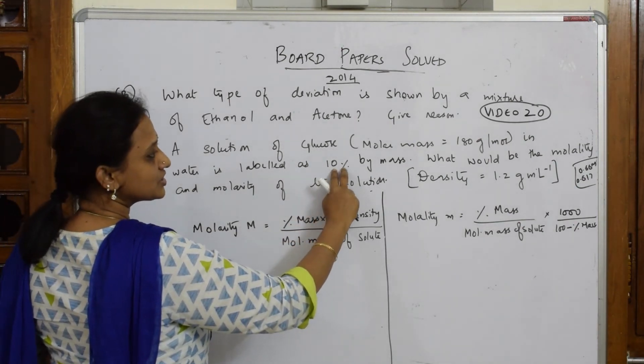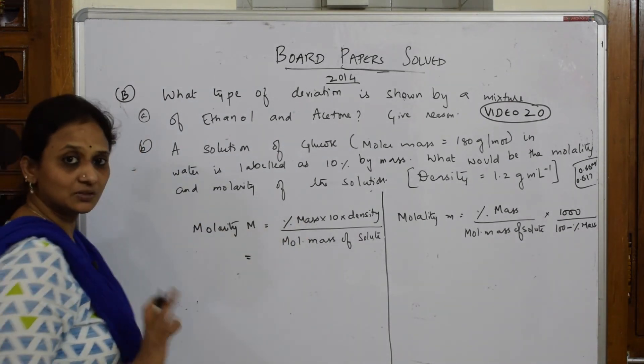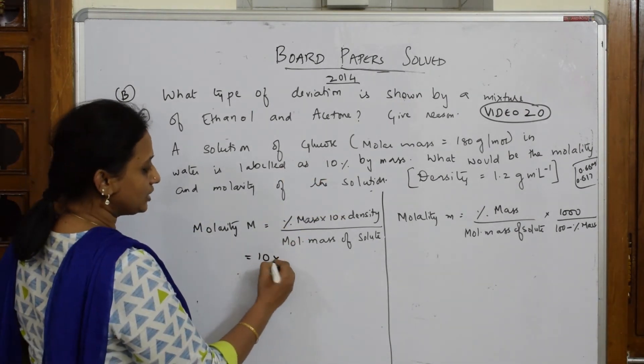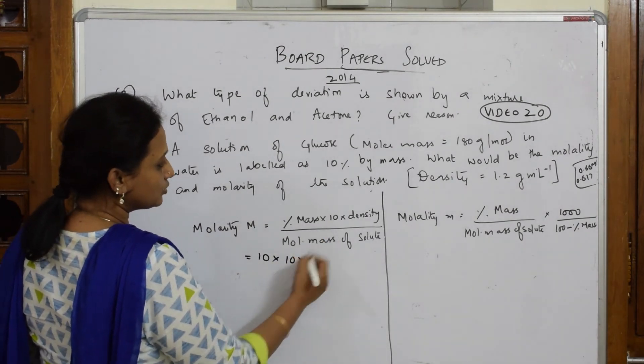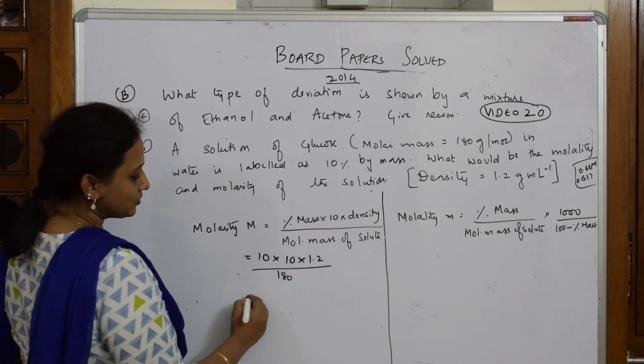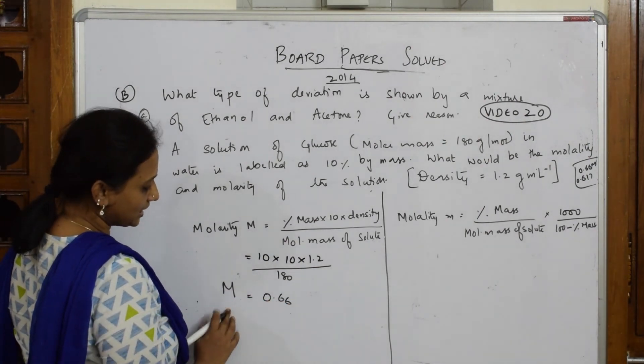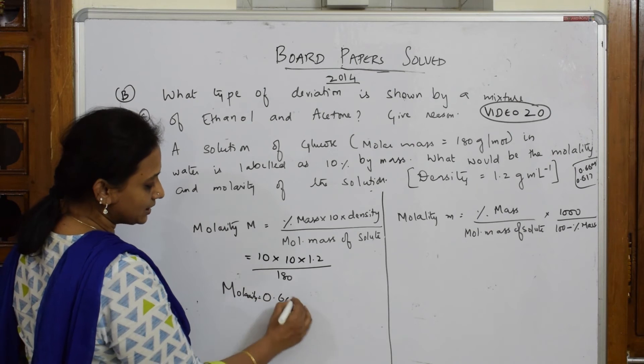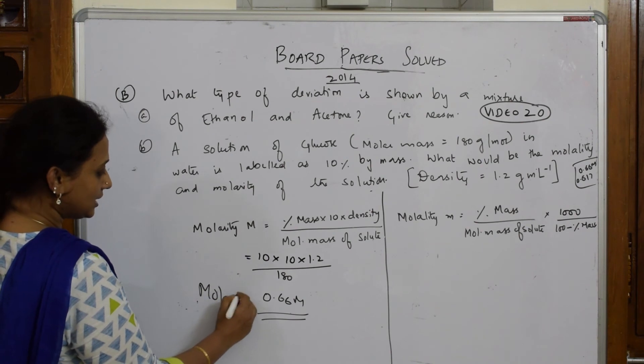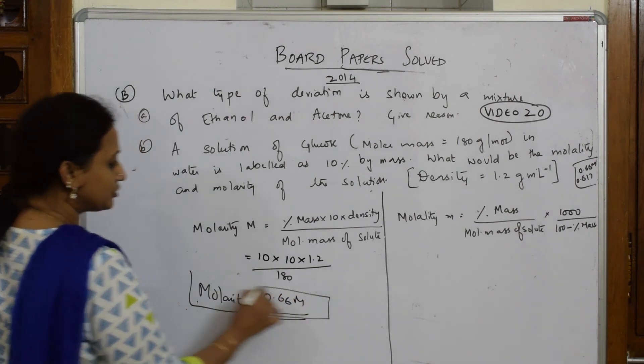So let us come back and find out molarity directly. Look here, what is the percentage mass given? 10 percent, isn't it? So write directly: 10 into density, how much is given? 1.2, divided by molecular mass of the solute 180. So when you solve this you get molarity equal to 0.66. So molarity, that's the reason the unit is capital M. So this is your answer. Directly, there is nothing to do with this, directly apply the formula and you'll get the answer. So please practice this formula, it will be very useful for you.